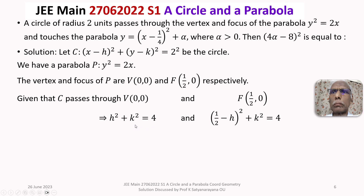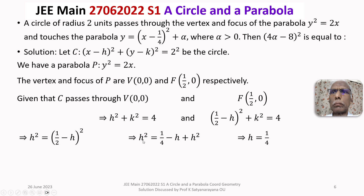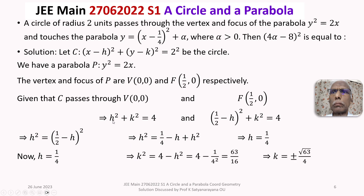From both equations, 4 − k² = h² and 4 − k² = (1/2 − h)². Setting them equal: h² = (1/2 − h)², which expands to give h² = 1/4, so h = 1/4. Substituting back: k² = 4 − 1/16 = 63/16, so k = ±√63 / 4.